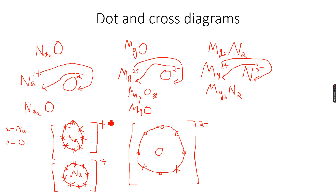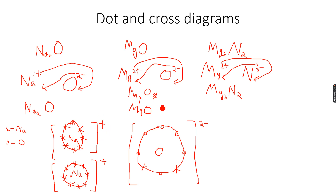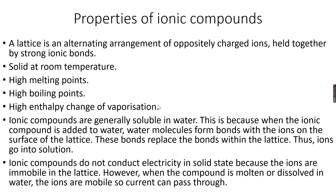Both sodium ions have a plus charge and the oxide ion has a two negative charge. This is the dot and cross diagram for Na₂O. Similarly, you can make dot and cross diagrams for all other ionic compounds. It's very easy. Now let's move forward to properties of ionic compounds.